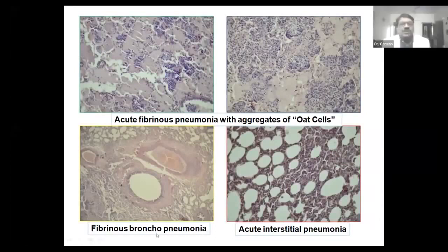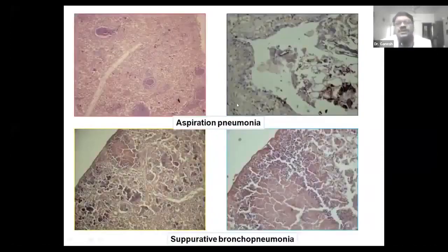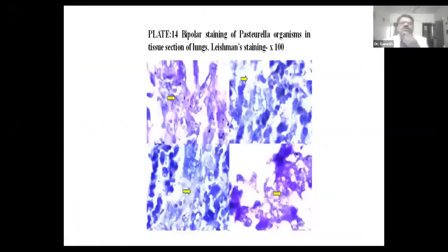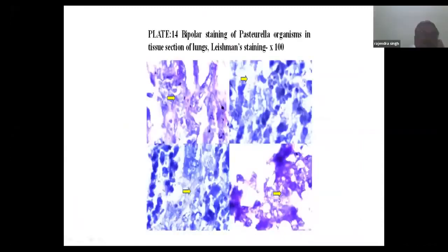In some cases, particularly in lambs, we found aspiration pneumonia. In some cases there is suppurative pneumonia with suppurative foci on histopathology. We identified bipolar organisms in the lung tissues by special bipolar staining.